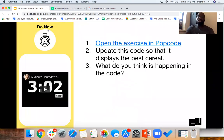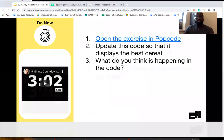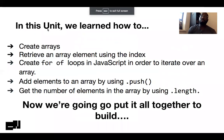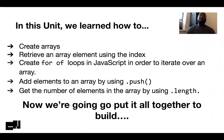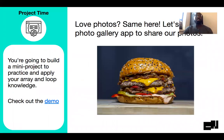Now, back to the slides. You all have learned so much in this unit. You learned how to use and create arrays, retrieve an element from the array using the index, how to iterate over an array using a for loop, and array methods like dot push and dot length. We're going to put that all together to build a photo gallery app.